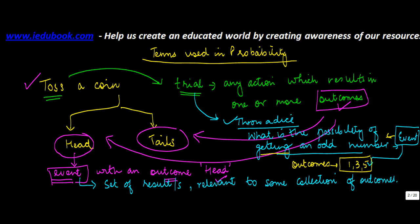The event is getting an odd number and the trial is throwing a dice. So this is how basically you use different terminologies in probability.